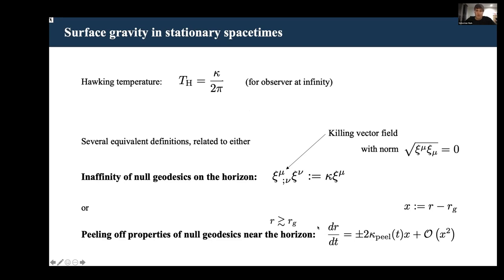Or the other way is by using the peeling properties of null geodesics near the horizon. You might know this one as peeling affine gravity. This is where you expand radial geodesics.